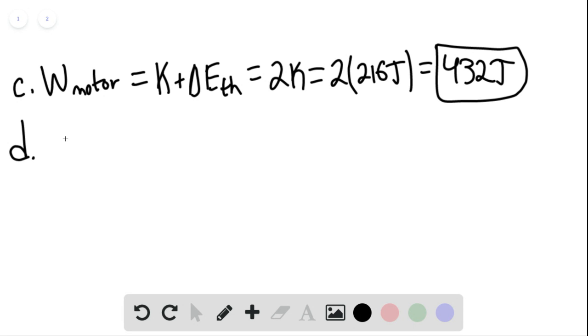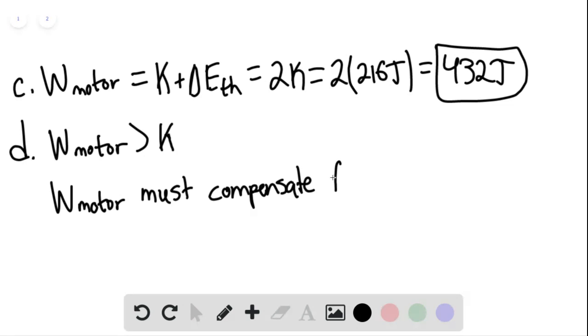For part D, we know that the energy supplied by the motor must be greater than the kinetic energy because the work of the motor must compensate for the change in thermal energy. This is essentially going to be the lost energy, and the work of the motor must overcome this lost energy.